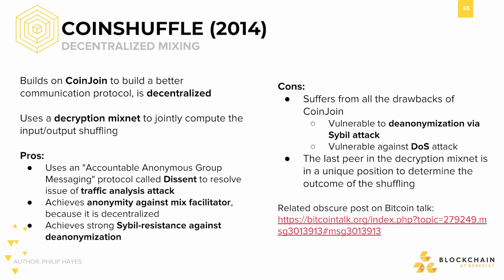CoinShuffle uses a protocol known as Dissent to resolve any traffic analysis issues. Additionally, it achieves anonymity against the mix facilitator because communications are now decentralized. Finally, with its decryption MixNet, it provides strong Sybil resistance against de-anonymization. However, it still suffers from some drawbacks of CoinJoin. Though Sybil resistance is stronger, it is not absolute — it is still possible to de-anonymize someone via a Sybil attack.